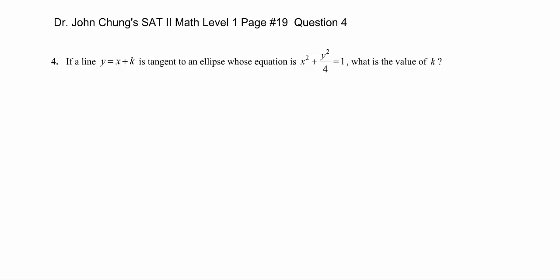Hi Claire, thanks for using the book. Here is the question you requested — page 19, number 4. We have a line y equals x plus k, and the other curve is x squared plus y squared over 4 equals 1, which is the ellipse. So we have a curve and a line.